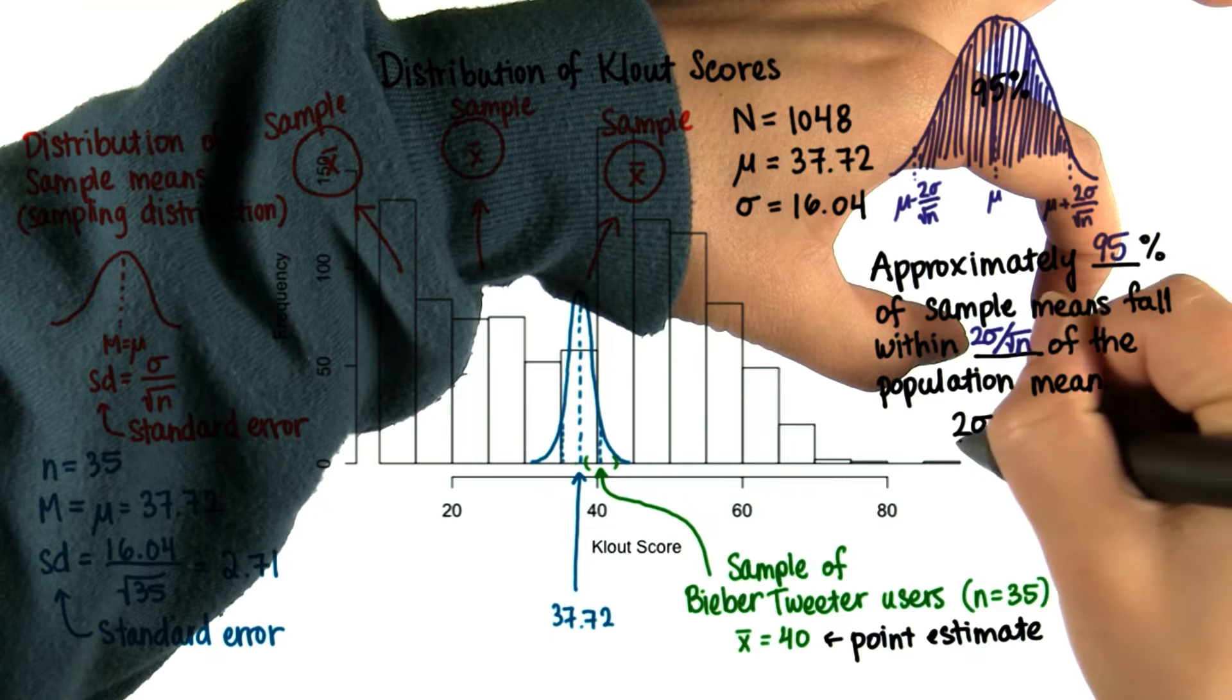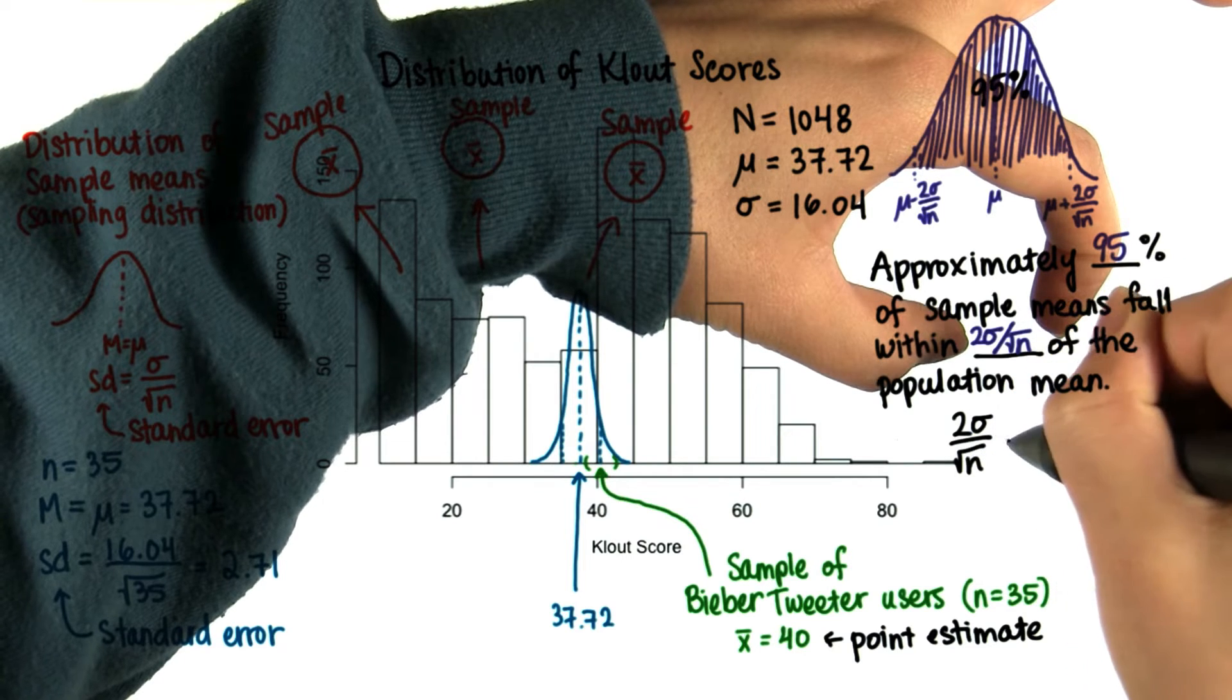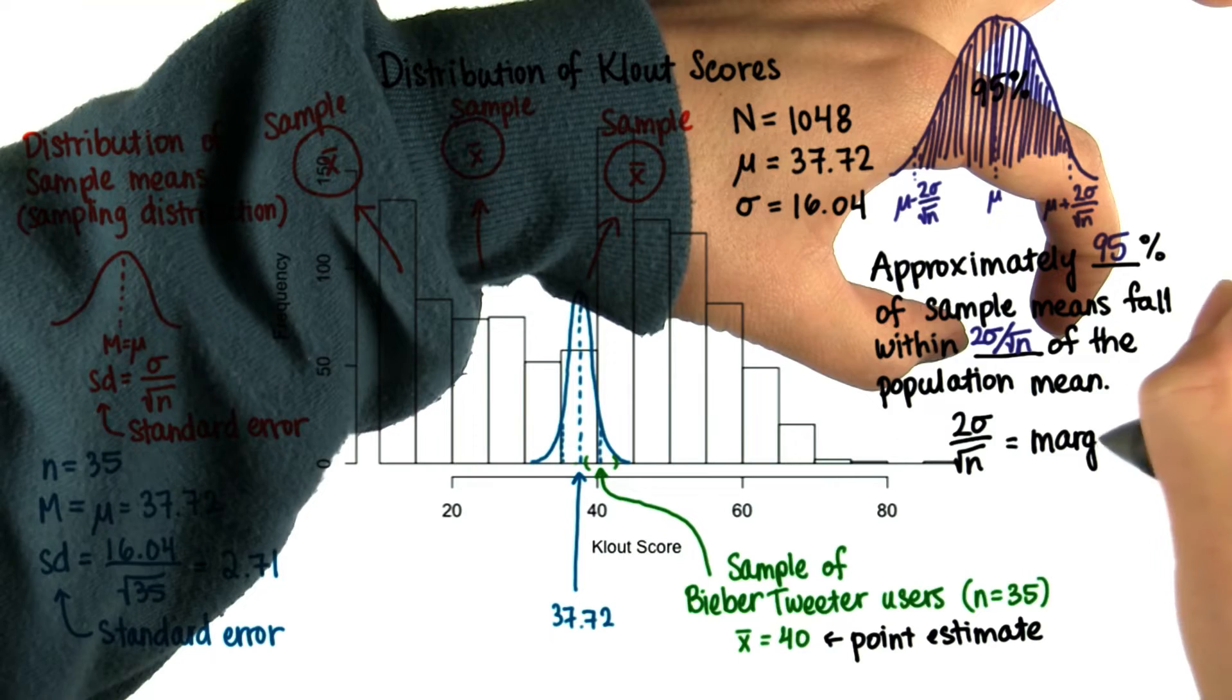This distance, 2 times the population standard deviation divided by root n, is called the margin of error.